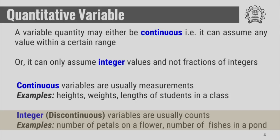Integer or discontinuous variables are usually counts. Examples include the number of petals on a flower or the number of fishes in a pond. If you count them, every time you will get full numbers and not fractions of integers.